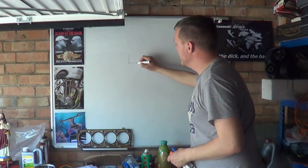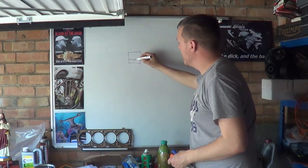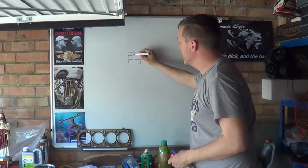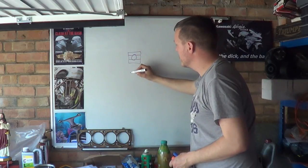So we have bearings which are made up of an inner race, an outer race, and a ball that sits in the middle.